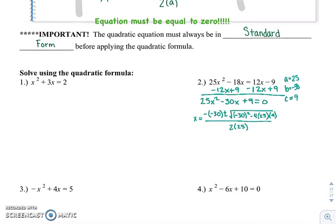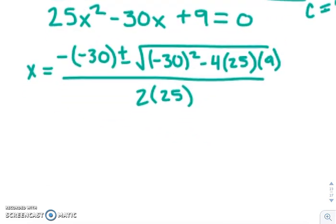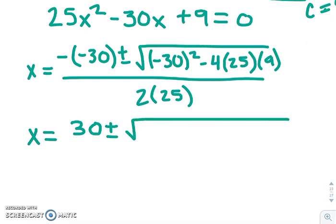And let me just simplify and take it in little pieces, because if you try to do the whole thing at once, you may mess up. So what I usually do is say, okay, negative -30 becomes positive 30, plus or minus, and then I type everything into the calculator as you see it there. So in parentheses, -30² minus 4 times 25 times 9.